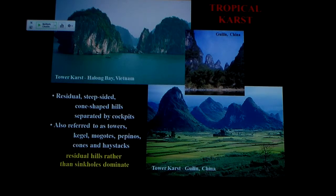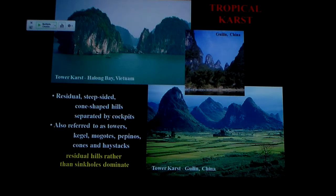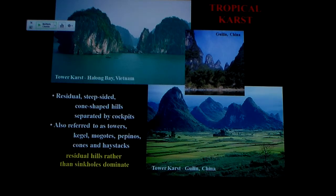Take this process to its ultimate conclusion where the sinkholes just keep expanding and expanding, and eventually the topography is mostly sinkhole with very little rock surrounding it. Here you've got what we call tower karst — you can see the remnants of the landscape left as hills. All of this valley is the sinkhole, which has expanded to where it now dominates the topographic surface. The surface used to be up at the top of the hills; now we're down at the level of the water table. Tower karst is kind of the ultimate end stage of sinkhole development.